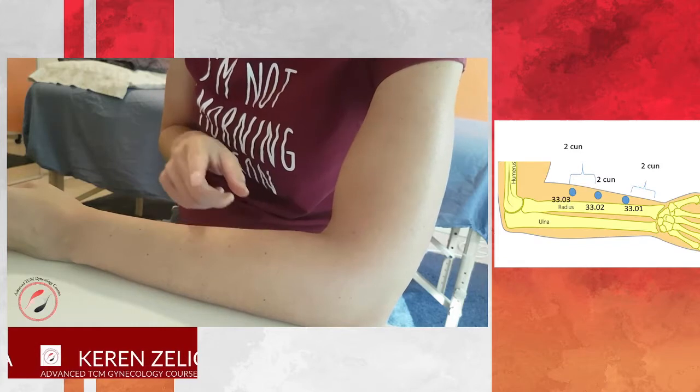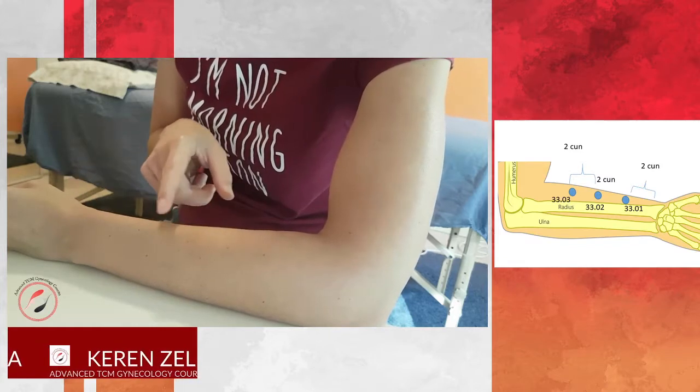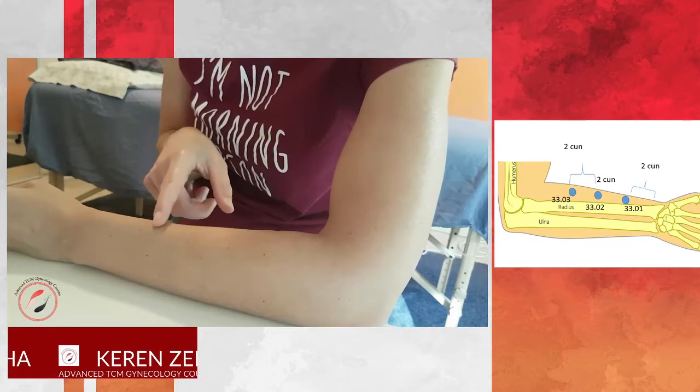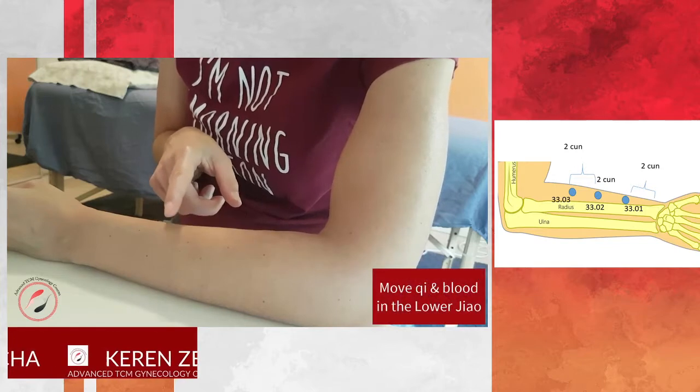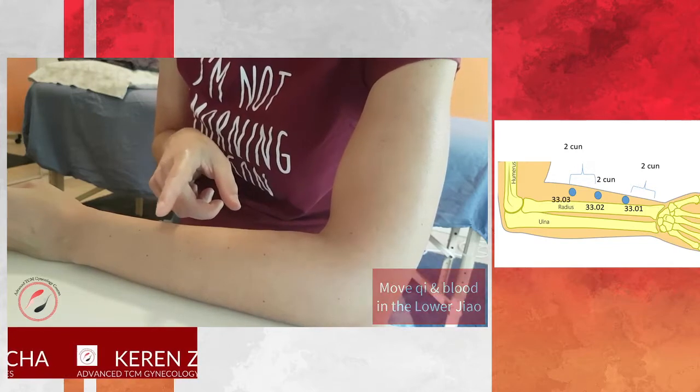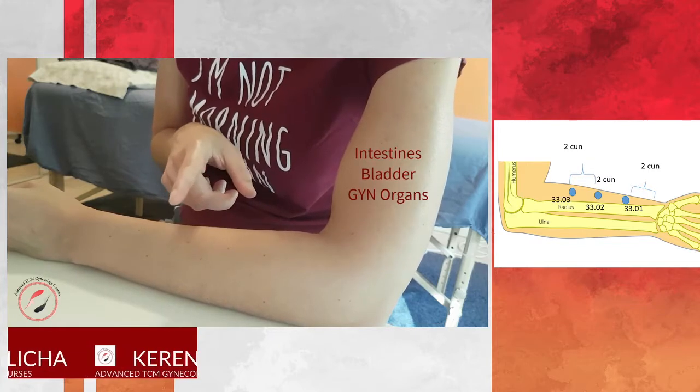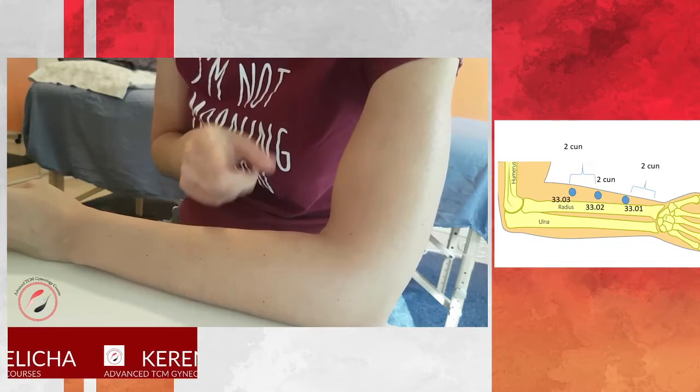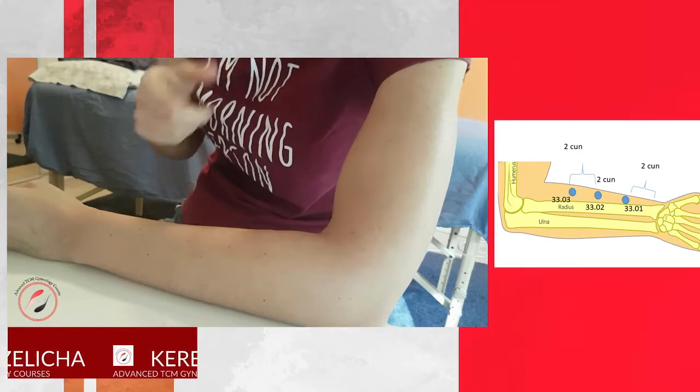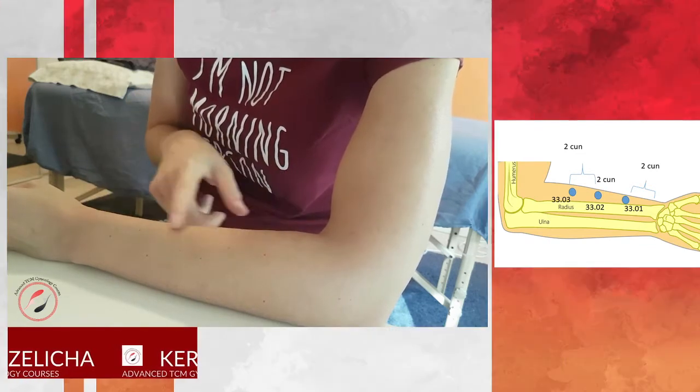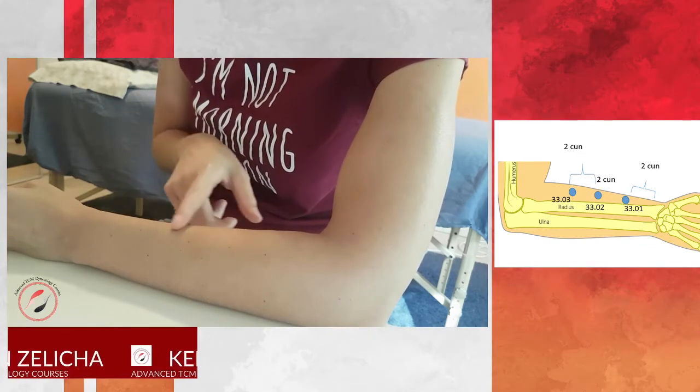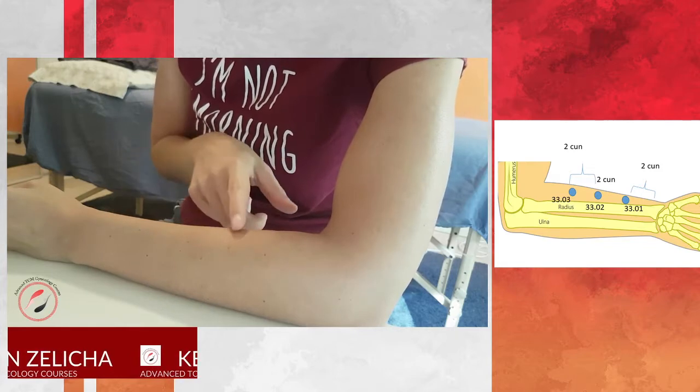The function is to facilitate and move the qi in the lower jiao, especially in the intestines, the bladder, and the gynecology organs. When do we use it, or why does it influence the lower jiao? It is on the large intestine meridian.